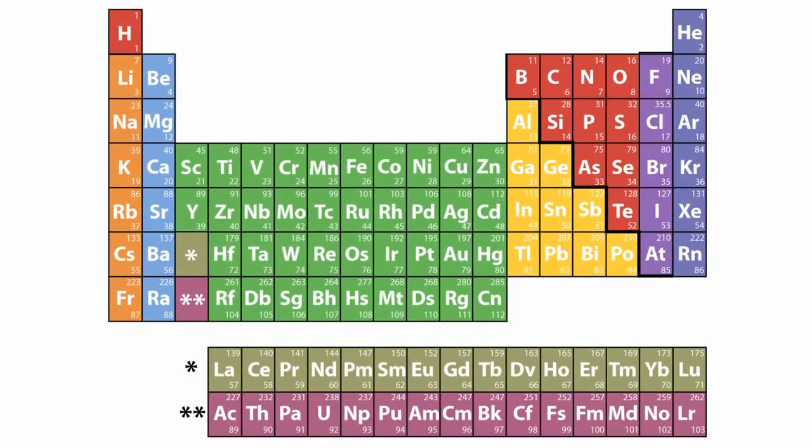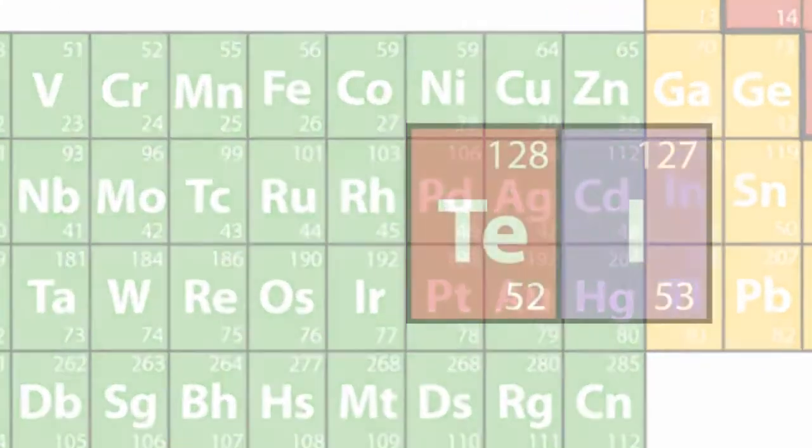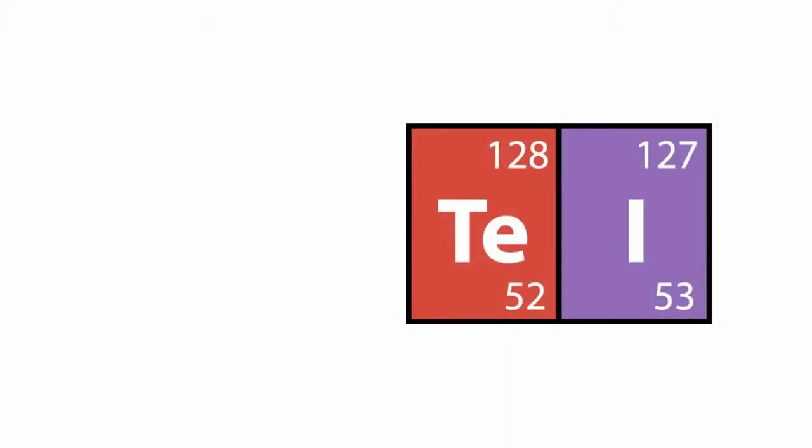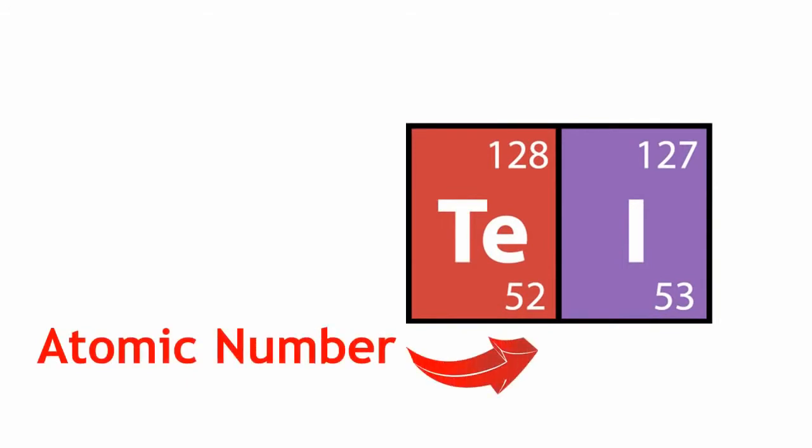In the modern periodic table, where the elements are ordered by their atomic number, tellurium, which has an atomic number of 52, would be put before iodine, which has an atomic number of 53, so they fit into their correct positions without breaking any rules.